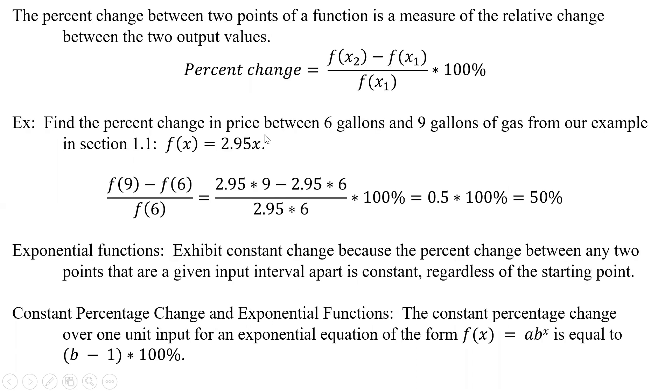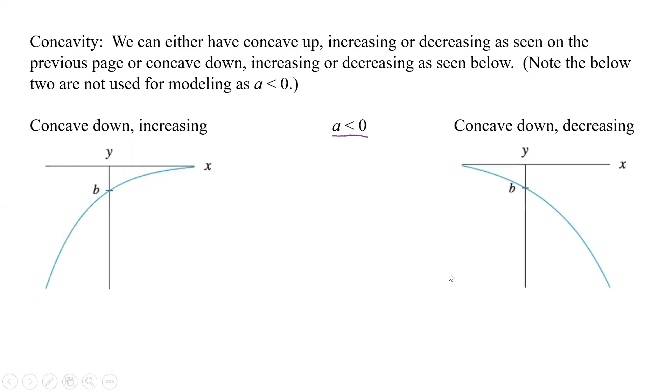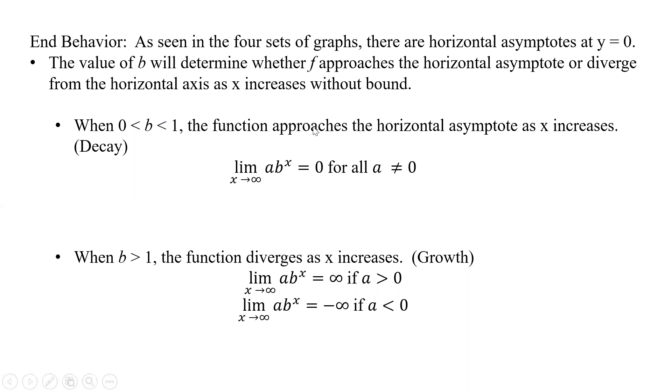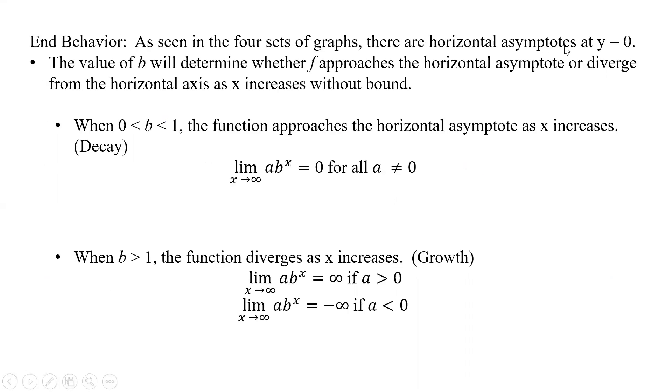And so as x increases, it's going to approach that horizontal asymptote when b is between 0 and 1. So less than that 1, like we talked about. And it's going to diverge when we have b greater than 1. So what happens is it's going to diverge as x increases. So this is kind of the growth function. This is the decay function.